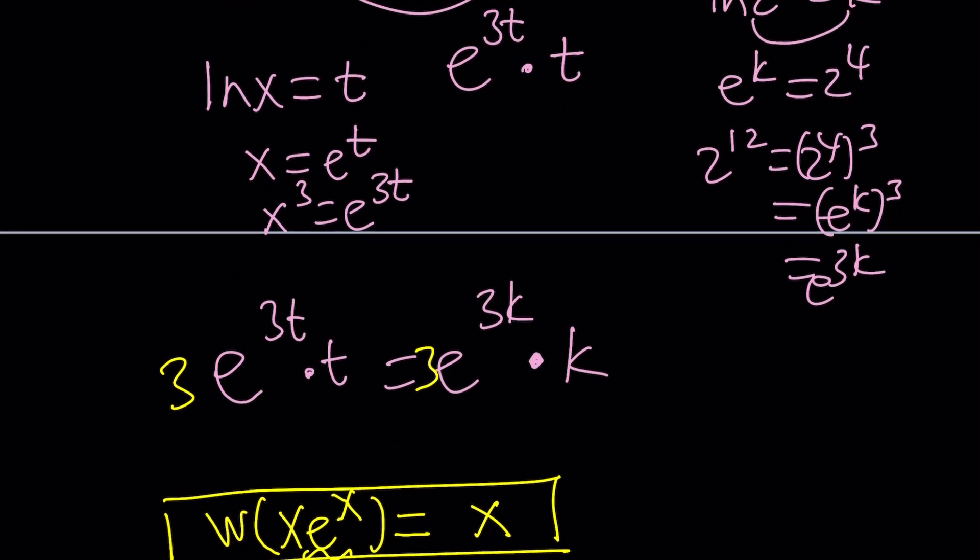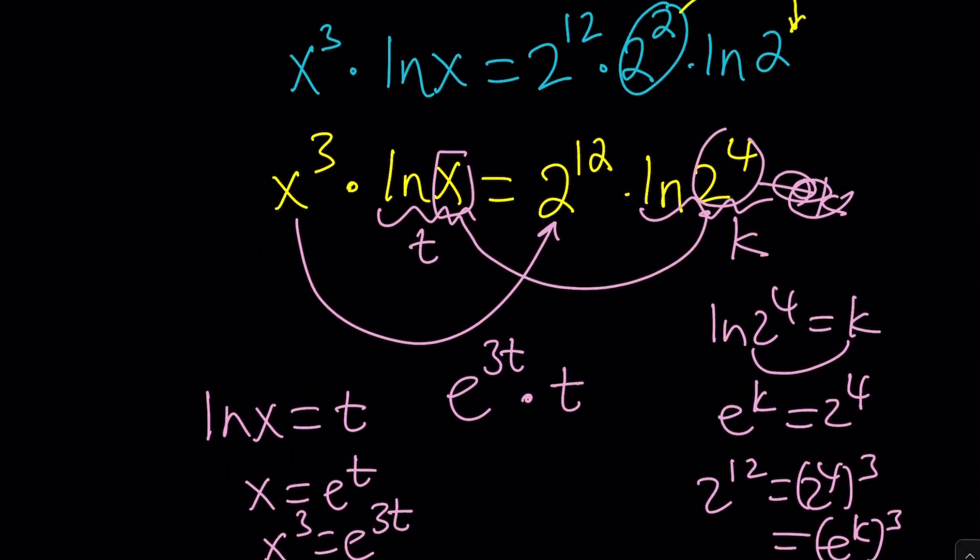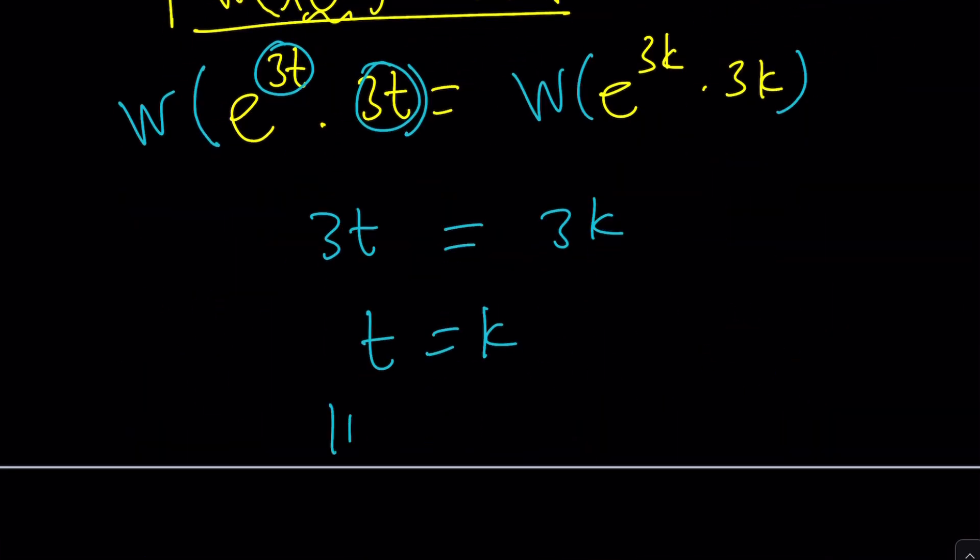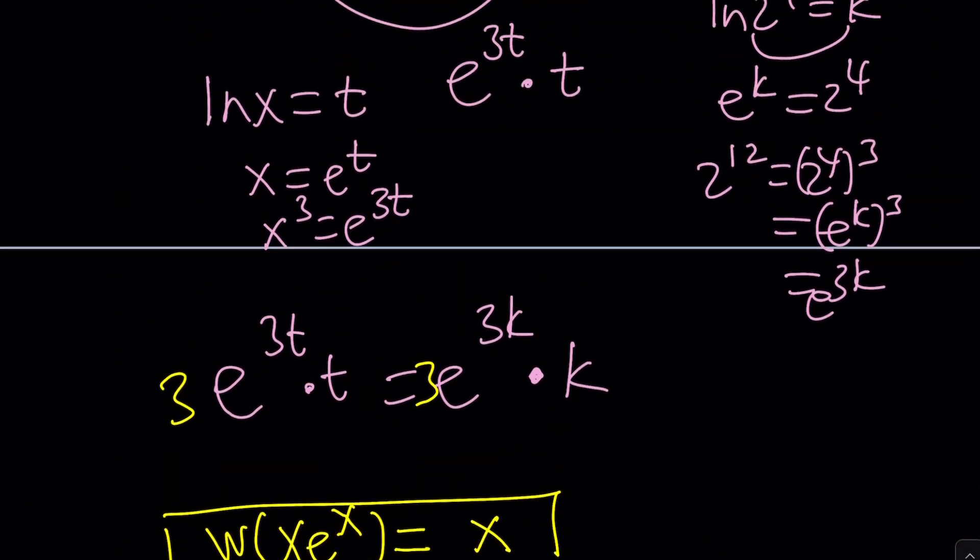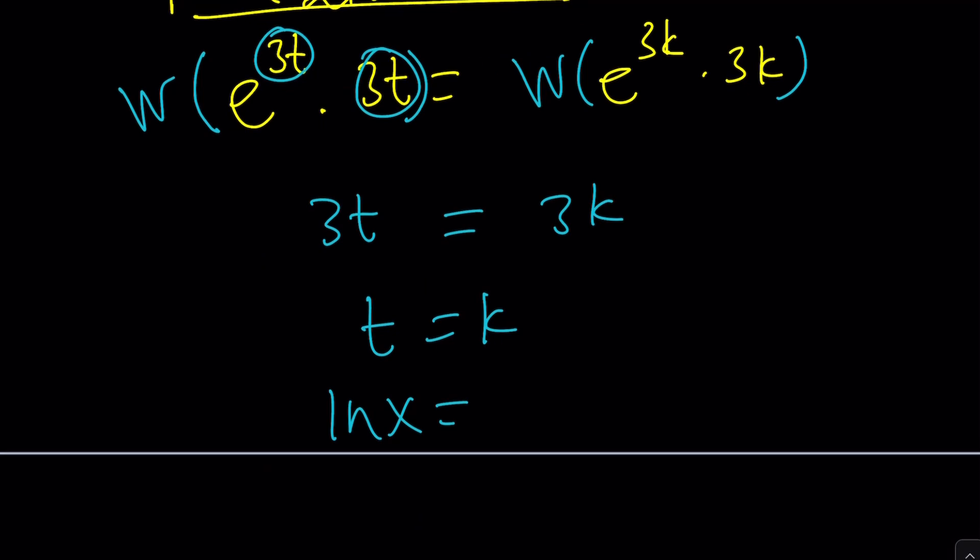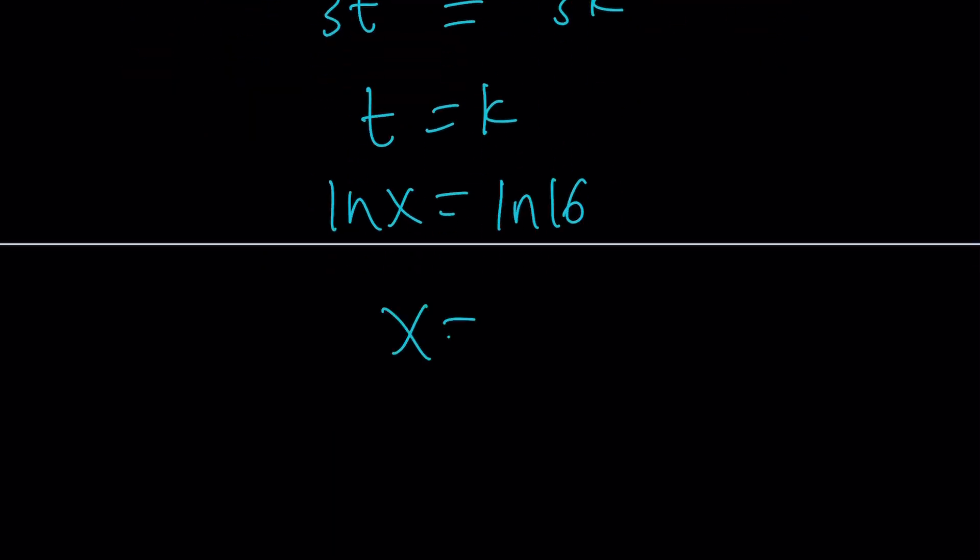So what is t? What's k? Let's go ahead and back substitute. t is ln x and k is ln 16. And what does this tell you? This tells you that x is equal to 16, which is the same thing as 2 to the 4th power.